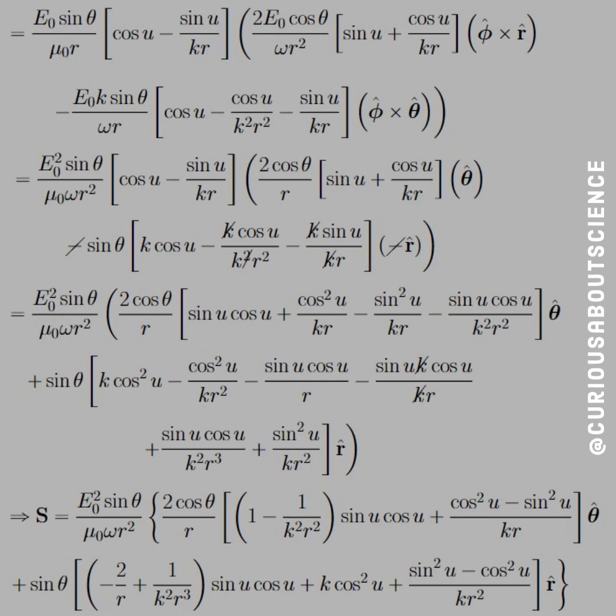And so we do. We see we get E₀² sin θ / μ₀ωr² with that bracket [cos u - sin u/(kr)]. That's all factored out. Now we're just canceling what we can.